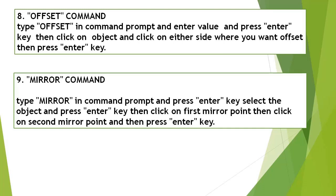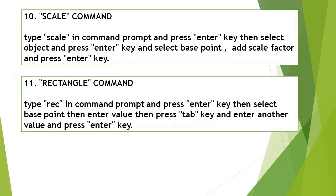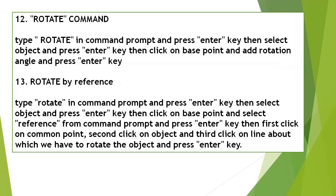Mirror Command: Type Mirror in the Command Line Window and press Enter, select the object and press Enter, then click on the first mirror point, then the second mirror point, and press Enter. Scale Command: Type Scale in the Command Line Window and press Enter, select the object and press Enter, select the base point, add the scale factor and press Enter. Rectangle Command: Type Rectangle in the Command Line Window and press Enter, select the base point, enter a value, press Tab, enter another value and press Enter.